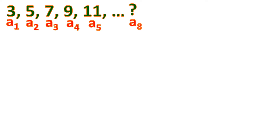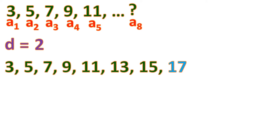Let's say we're going to find the 8th term, or a sub 8. We just need to know the common difference — the value we keep adding to get the sequence. Here, we add 2 each time (5 minus 3 is 2). Since the 8th term is close to the 5th, we can do it manually: 11 plus 2 is 13, 13 plus 2 is 15 (6th and 7th terms), and 15 plus 2 is 17. So the 8th term is 17.